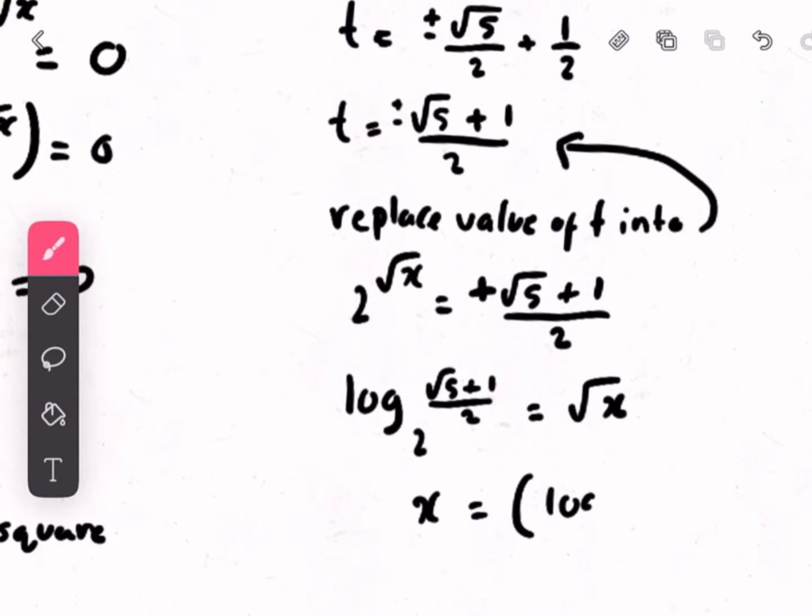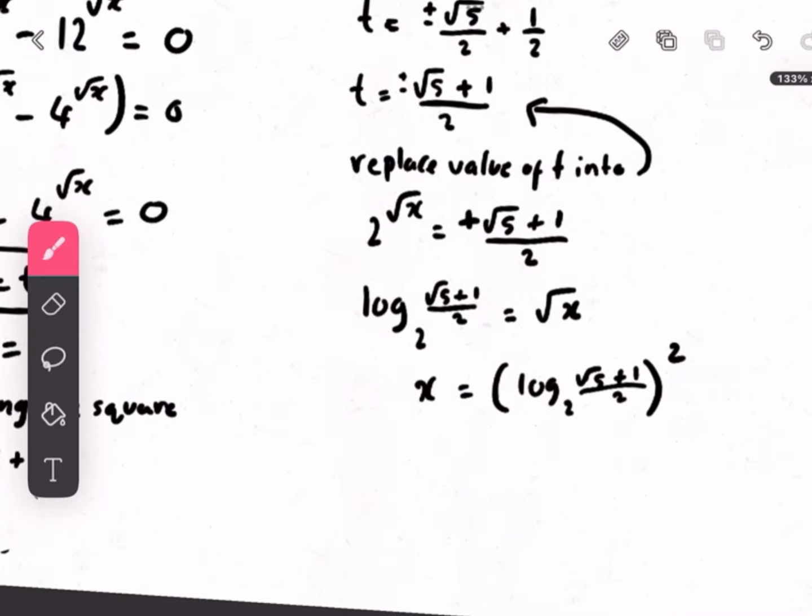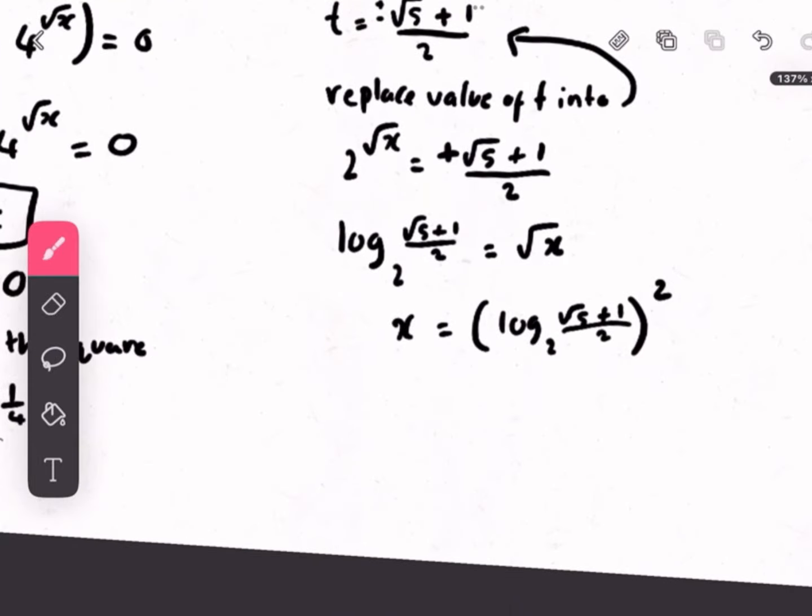Now we have to square the whole thing. This is our end result, after we square the entire thing, and this is our final answer. And obviously, the second answer would be negative root 5, like log 2, minus root 5 plus 1 over 2, or squared. And those are your two answers.